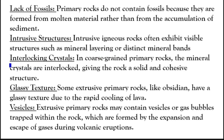Interlocking crystals: in coarse-grained primary rocks, the mineral crystals are interlocked, giving the rock a solid and cohesive structure. Glassy texture: some extrusive primary rocks like obsidian have a glassy texture due to the rapid cooling of lava.